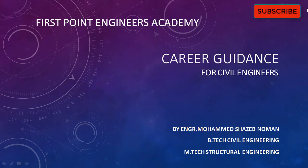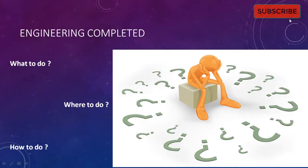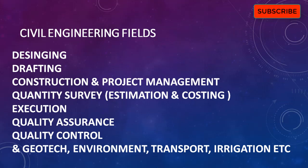Hello friends, today in this video we are going to discuss about the different fields available in civil engineering. After completing our engineering bachelor's degree, whether B.Tech or B.E., you'll have so many doubts in your mind — which field should I select, will I grow in that field, will I get a good salary? So before clearing your doubts, first we have to understand how many fields we have in civil engineering. These are some fields: designing, drafting, construction and project management, quantity survey, estimation, costing, execution, quality assurance, quality control, geotech, environment, transport, irrigation, and more.